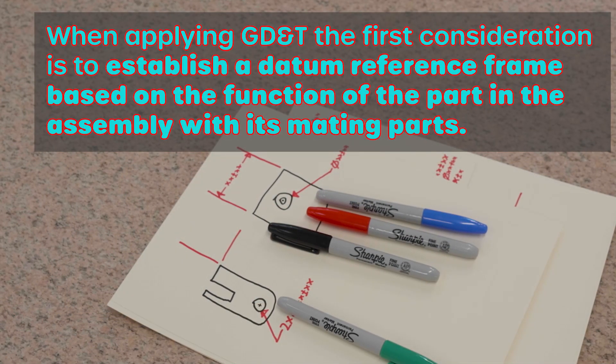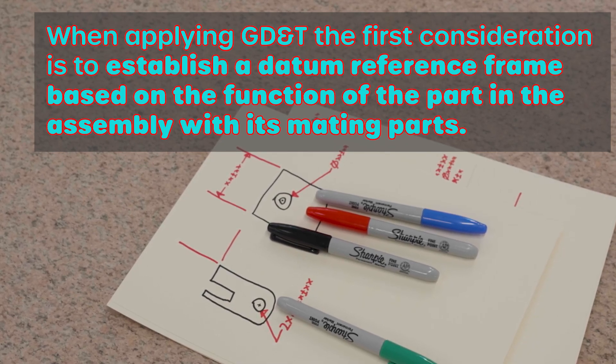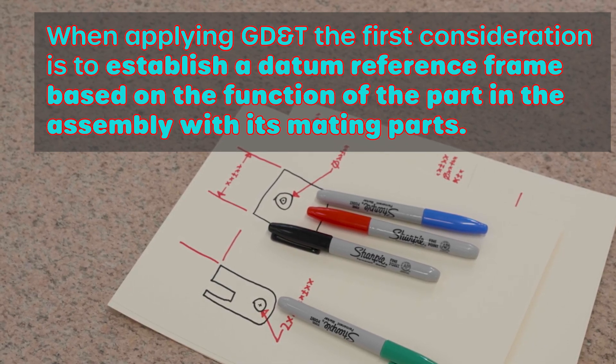There's three really important ones. The first is that it says we establish a datum reference frame based on the function of the part in its assembly with its mating parts. This is what we did in the previous video. We identified features that made an assembly and made those datum features. In a second, I'll show you how to do that on the drawing as well.